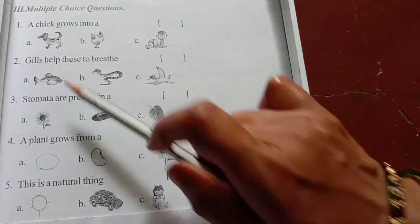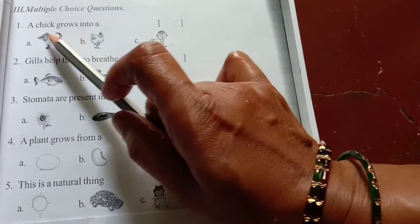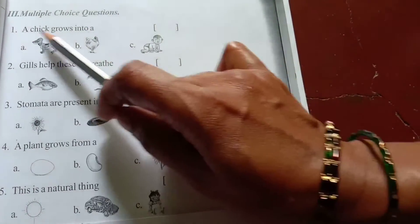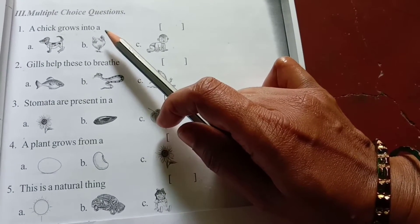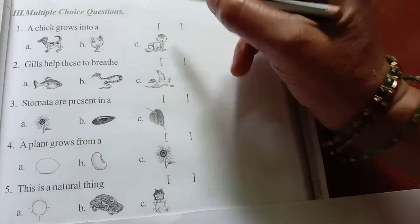First. A chick grows into a hen. Hen. Right, hen. Right, b.